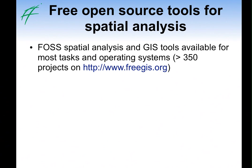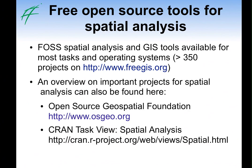Free open source tools for spatial analysis are widely available for all types of spatial analysis or GIS analysis. There are more than 350 projects recorded on the freegis.org website, and for most tasks and operating systems you would find a free open source software alternative to commercial software. An overview of important projects can also be found on the website of the Open Source Geospatial Foundation, and related to the Statistical Programming Language R, there is the CRAN Task View for spatial analysis showing all the different R packages.